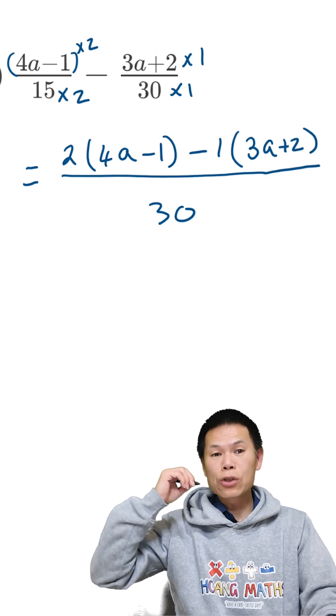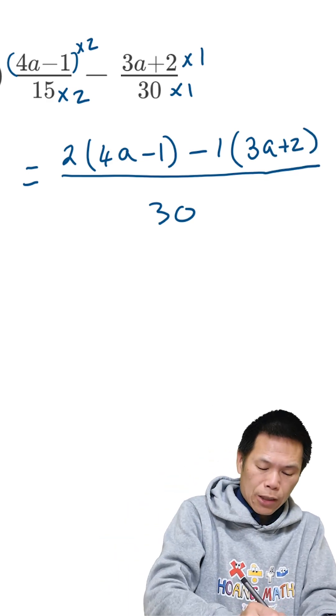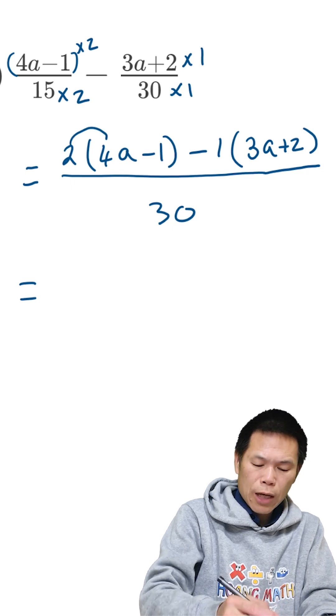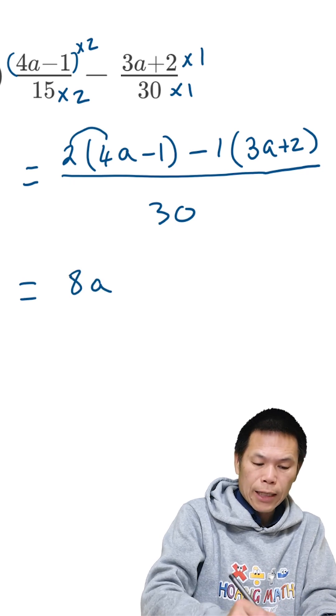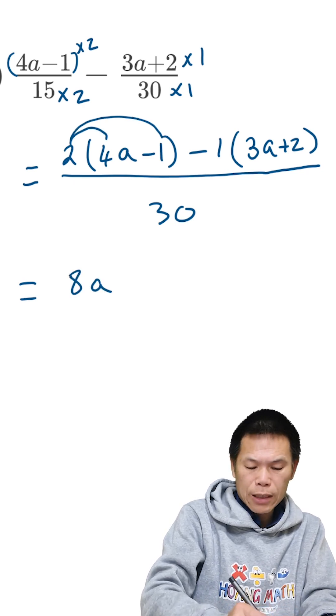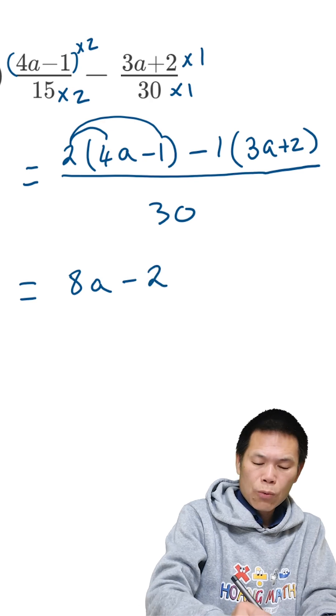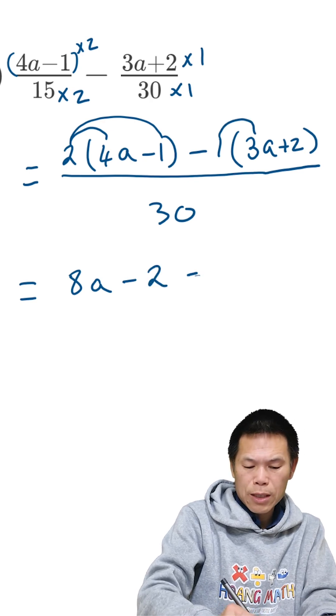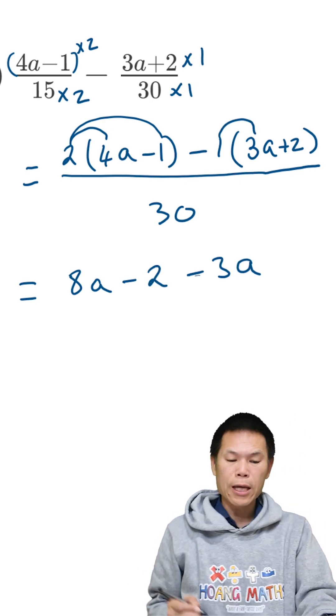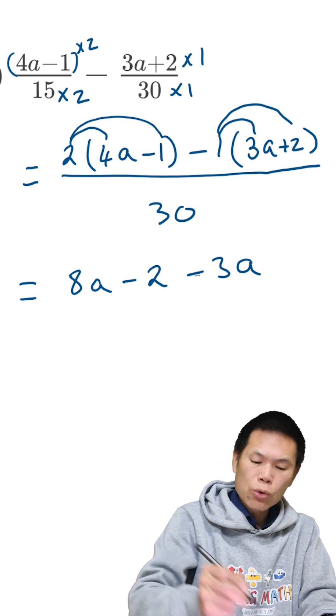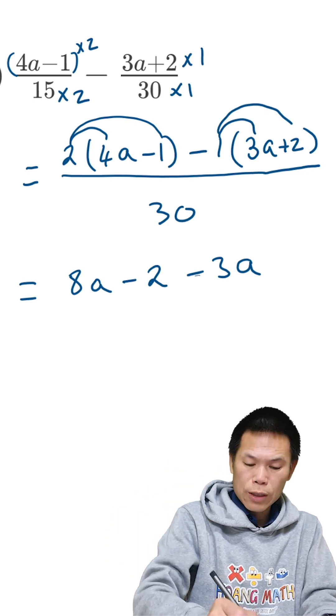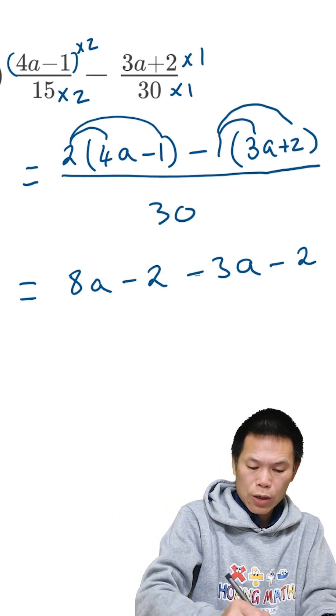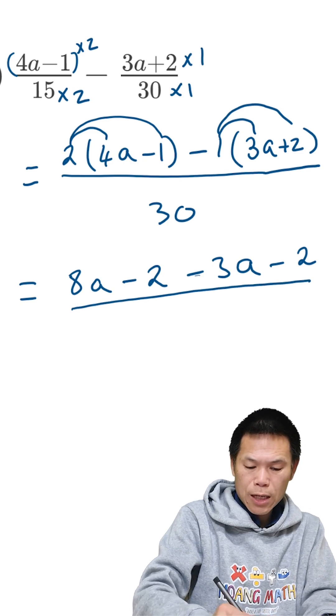There you go. Now I just remove the brackets. So that is... this times together: 8a, this times that gives me minus 2. Negative 1 times 3 gives me negative 3a, and negative 1 times 2 gives me negative 2. That becomes minus 2 over 30.